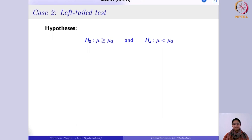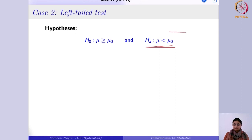The next is the left-tailed test. In the left-tailed test, the alternative says we are focusing on observations less than μ₀. In the diagram, you would have −z_α on the left with area α on that side. You would reject the null hypothesis if the test statistic falls in that left region.